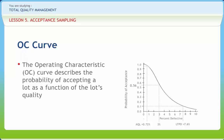Likewise, the probability of accepting 1% defective lots is 0.91, and the probability of accepting 7% defective lots is 0.13. OC curves are generally summarized by two numbers: the Acceptable Quality Level AQL and Lot Tolerance Percent Defective LTPD. The AQL is that percent defective with a 95% chance of acceptance. From Figure 2, the AQL is 0.72% defective.